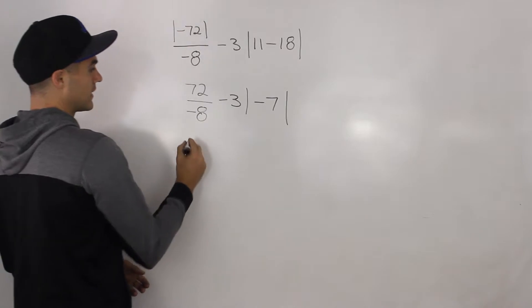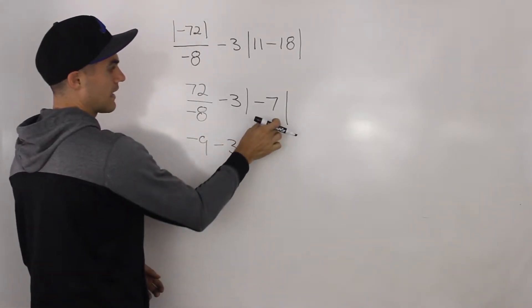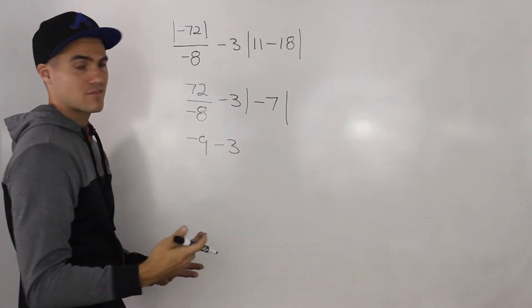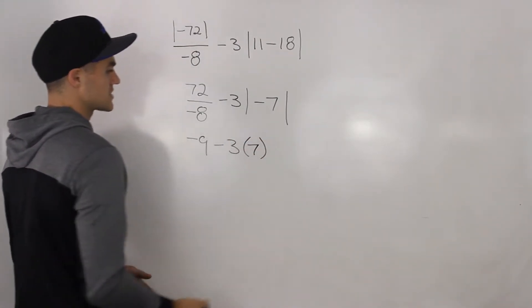Now 72 divided by negative 8 gives us negative 9. We still have this minus 3 here. And then this absolute value of negative 7 turns into positive 7.